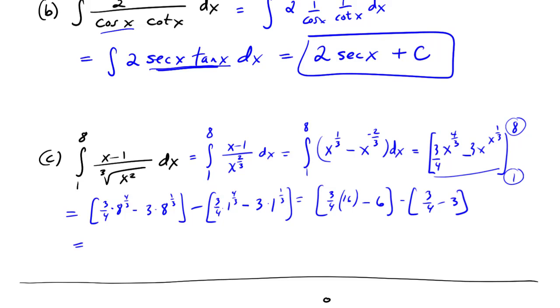get, so 12 minus 6 would give me a 6 minus 3/4 plus 3, so 9 minus 3/4, which is 36/4 minus 3/4,